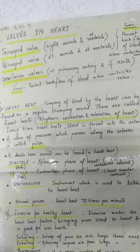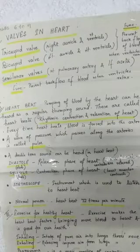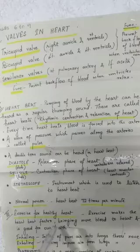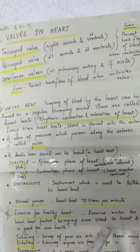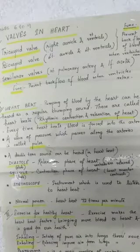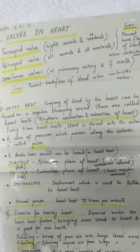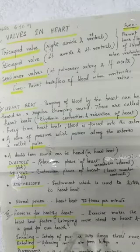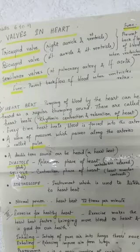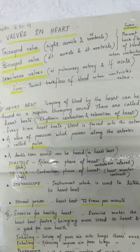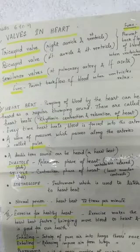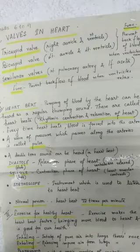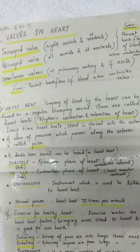Exercise makes the heartbeat faster, bringing more blood to the heart, and is good for our health. What is inhalation? It is the intake of pure air rich in oxygen into the lungs through the nose. What is exhalation? It is the release of impure air having more carbon dioxide from the lungs through the nose. What is pranayama? It is a yogic practice of controlling your breath.